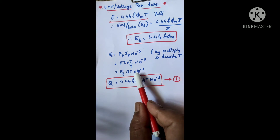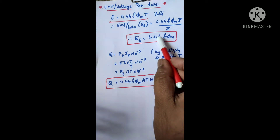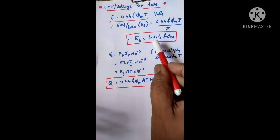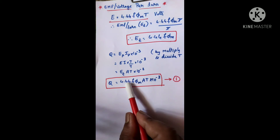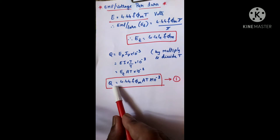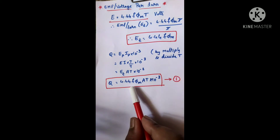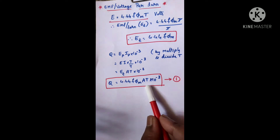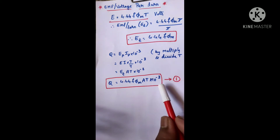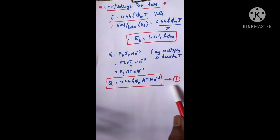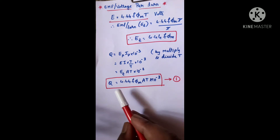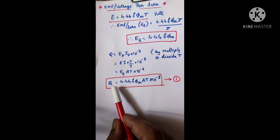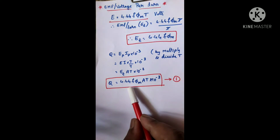Now this ET can be replaced from the equation we derived. So Q = 4.44 × f × φm × (ampere-turns) × 10⁻³. Let us consider this as Equation 1. We have the output equation in terms of EMF per turn with the flux φm still present, so let us try to get flux in terms of a simplified expression related to Q.